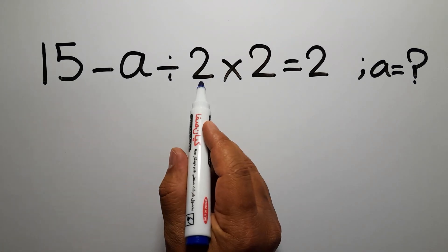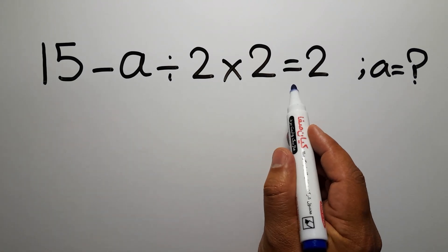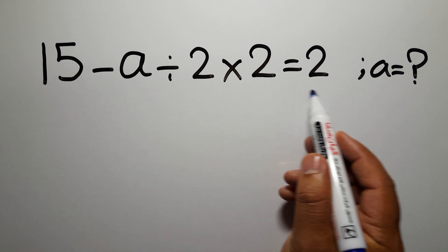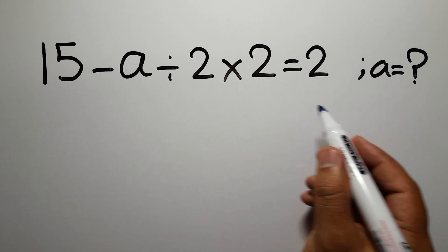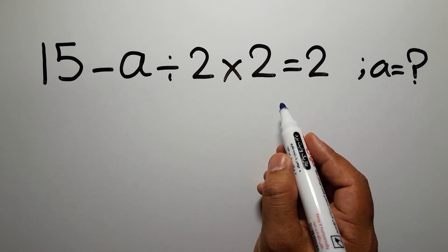15 minus a divided by 2 times 2 is equal to 2. Our goal is to find the value of a. Are you ready to solve? Let's get started.